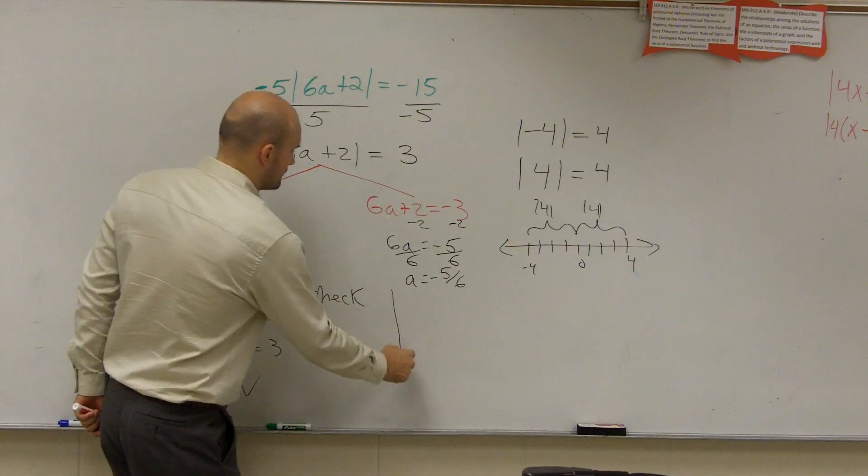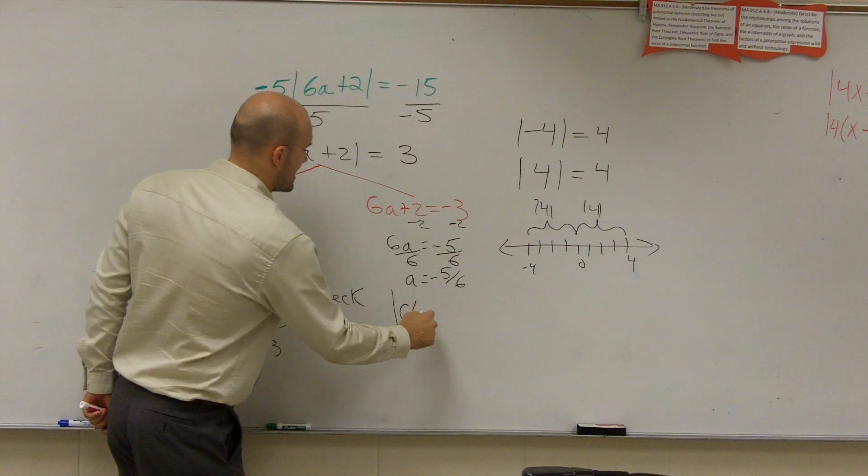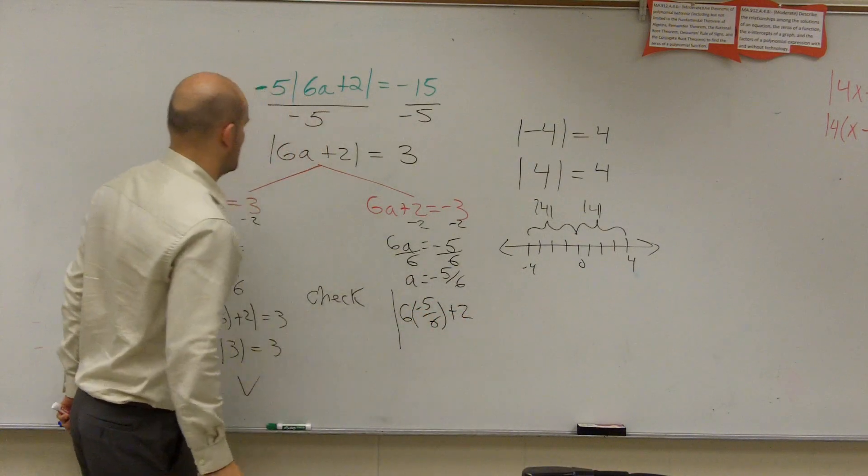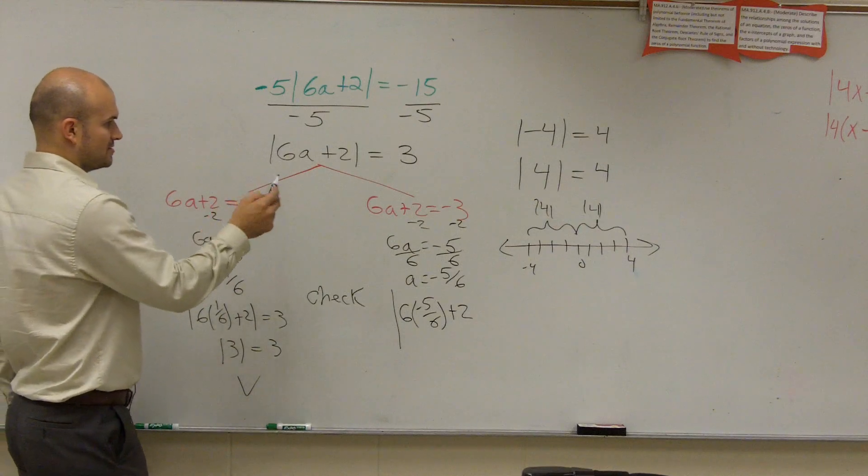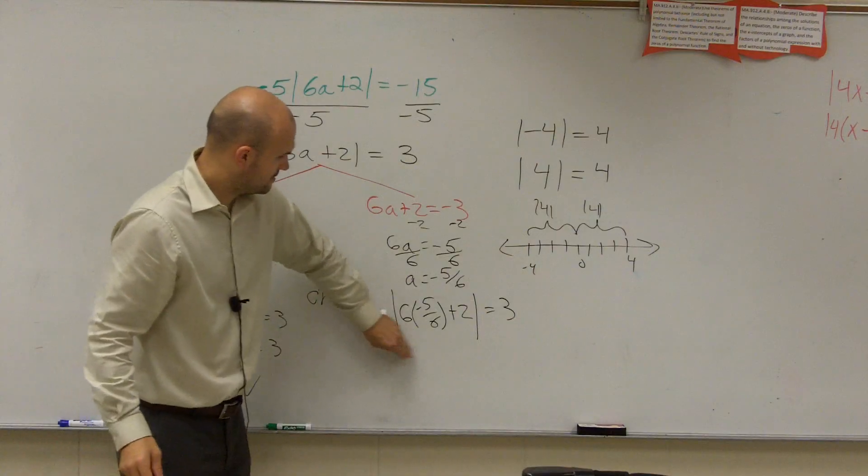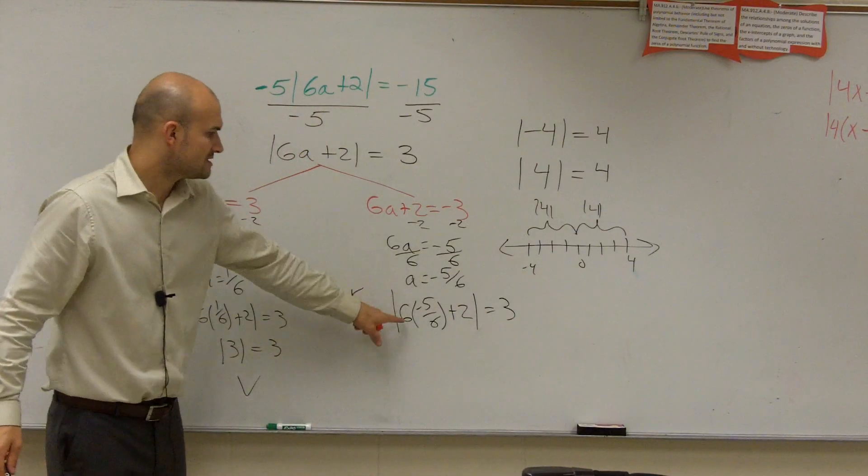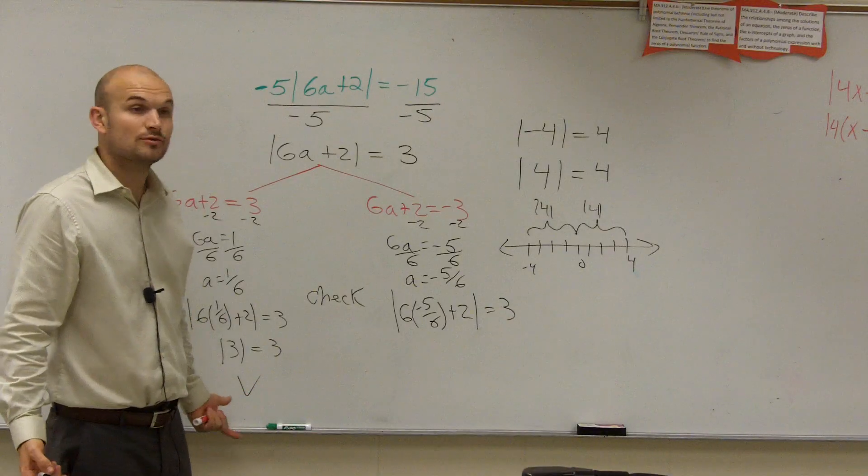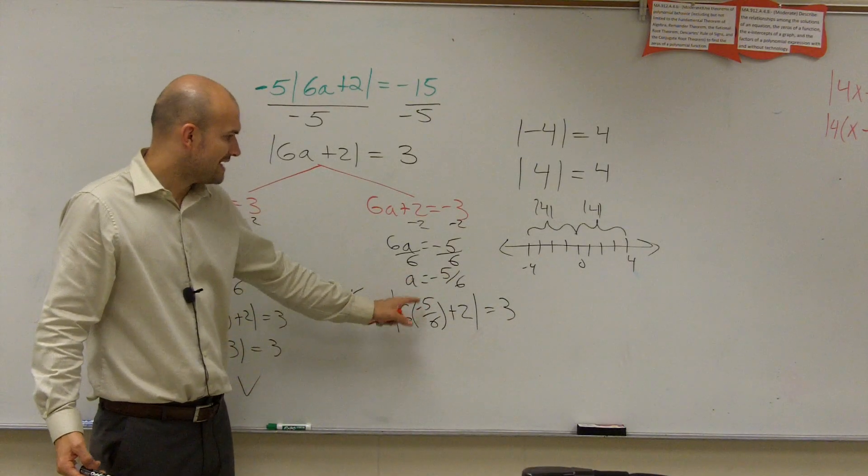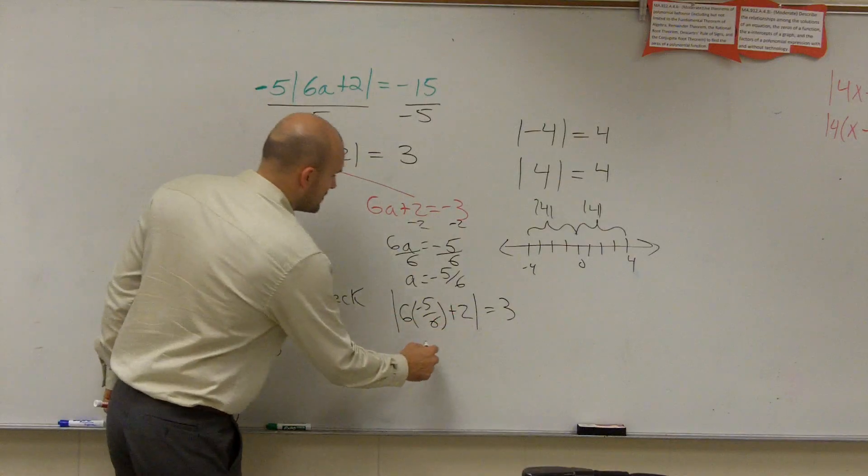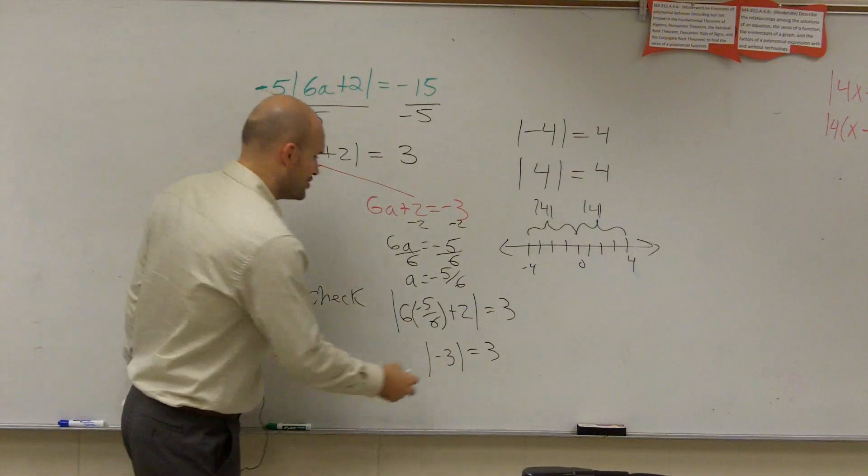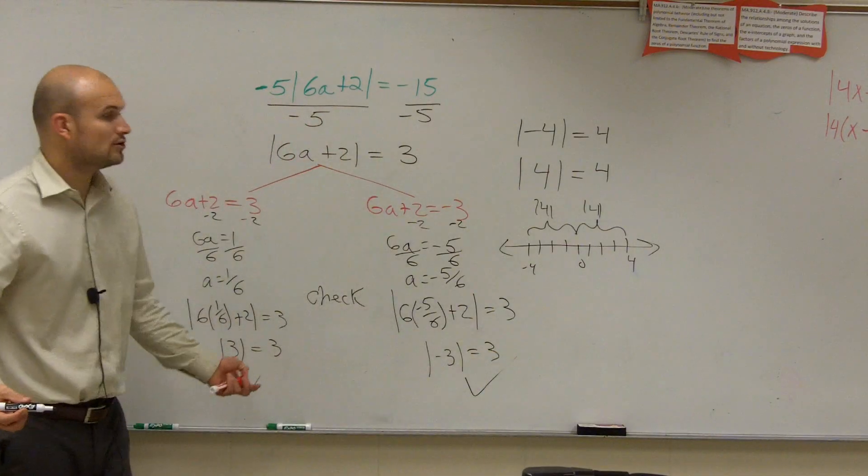Next one. Absolute value of 6 times negative 5 over 6 plus 2, minus 2, right there. Absolute value equals 3. There we go. 6 times negative 5 over 6, that's equal to negative 5. Negative 5 plus 2 is equal to absolute value of negative 3, which is equal to 3. Is that true or false? That's true. So there you go. Both solutions work.